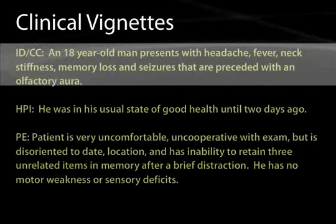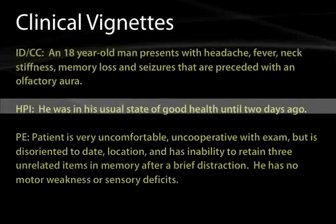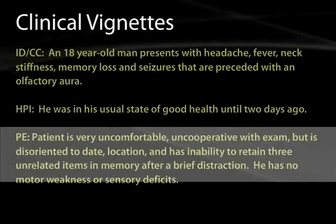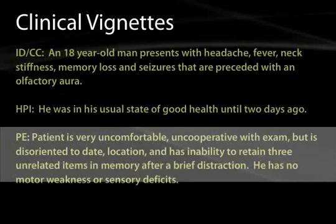Another clinical vignette: an 18-year-old man presents with headache, fever, neck stiffness, memory loss, and seizures preceded by an olfactory aura, in his usual state of health until two days ago. He is disoriented to location and date and unable to retain three unrelated items in memory. He has no motor weakness or sensory deficits. This young person with memory loss, seizures, and fever should raise strong suspicion for herpes simplex encephalitis — a disease neurologists fear greatly. When you combine fever and what looks like meningitis with seizures, it is an encephalitis, because seizures indicate actual brain tissue irritation.